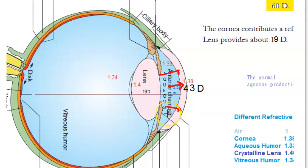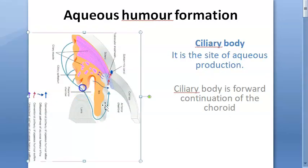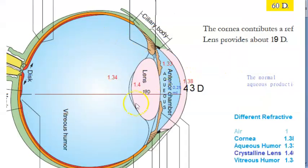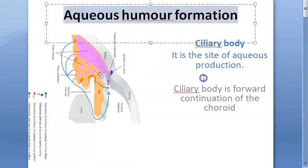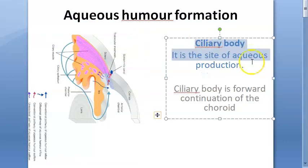You need aqueous humor for giving nutrients to the cornea and also giving nutrients to the lens. So aqueous humor gives all the nutrients to the cornea and the lens. Who is making this aqueous humor? It is the ciliary body.